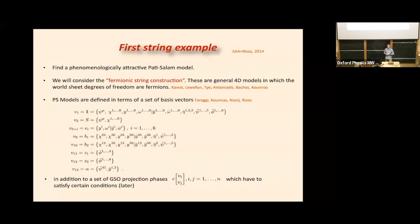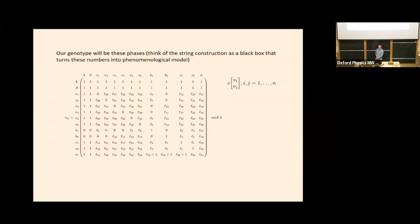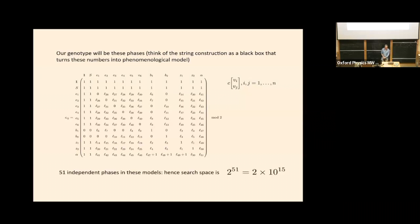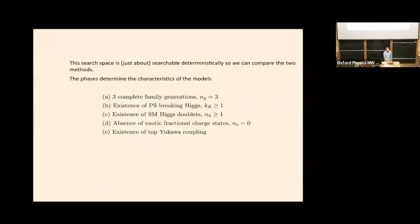We were looking for something similar to the standard model, so we focused on Pati-Salam models which have an SU(2) cross SU(2) structure — very similar to the standard model — and the standard model would come out of them. There's a construction developed by John Rizos amongst other people, and that's who I met and we decided we should have a look at this with genetic algorithms. Everything boils down to a huge matrix of ones and zeros in these models, and it turns out there are 51 degrees of freedom left after satisfying the trivial ones — so you've got 2^51, roughly 10^15, as the parameter space.